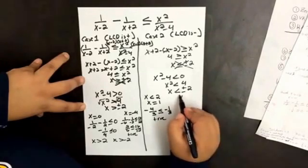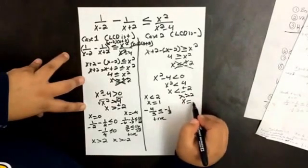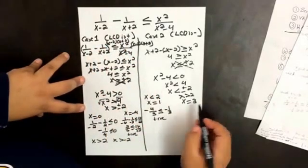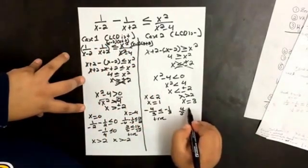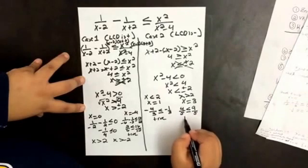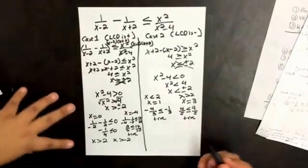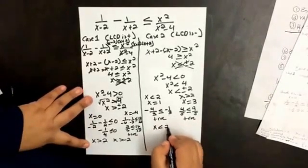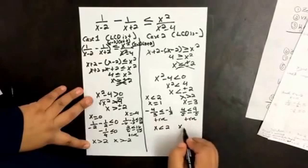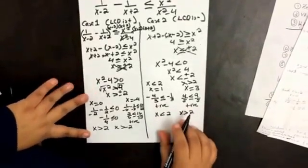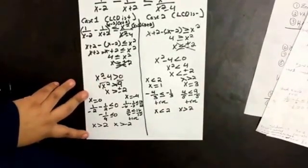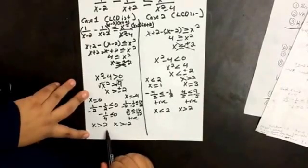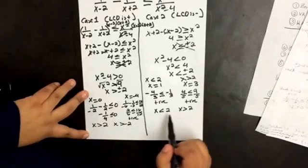Now let's check a value for x greater than 2. x equals 3. When we plug it into the original inequality, we get 4 fifths less than or equal to 9 fifths, which is true. So then for this side, we have that x is less than negative 2 or x is greater than 2.